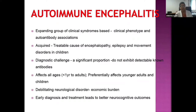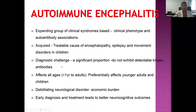Autoimmune encephalitis is an expanding group of clinical syndromes based upon the clinical phenotype and the associated autoantibody — these two together make up a syndrome. It is an acquired and treatable cause of encephalopathy, epilepsy, and movement disorders in children. It often poses a diagnostic challenge because a significant proportion of children do not exhibit detectable known antibodies, either because commercial assays lack sensitivity or because new antibodies are yet to be discovered.